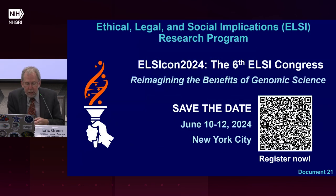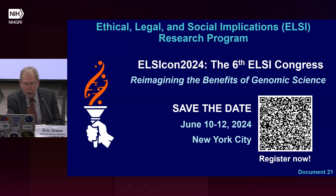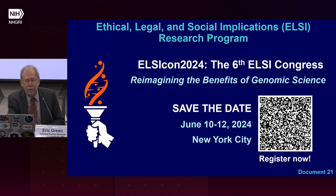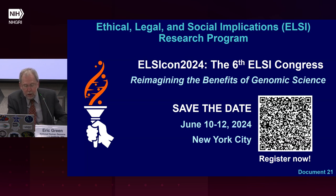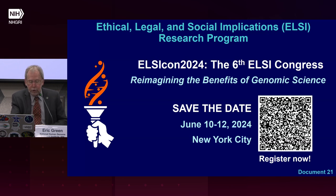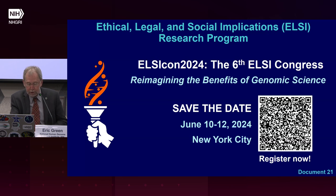The Ethical, Legal, and Social Applications, or ELSI Research Program, supports research that anticipates, explores, and addresses implications of genetics and genomics for individuals, families, and communities. The sixth ELSI Congress will be held June 10-12 in New York City, featuring both in-person and virtual components. The theme for the 2024 Congress is reimagining the benefits of genomic science, and ELSI Con invites researchers, practitioners, trainees, and other scholars to share their latest ELSI research. Registration for the event is now open.